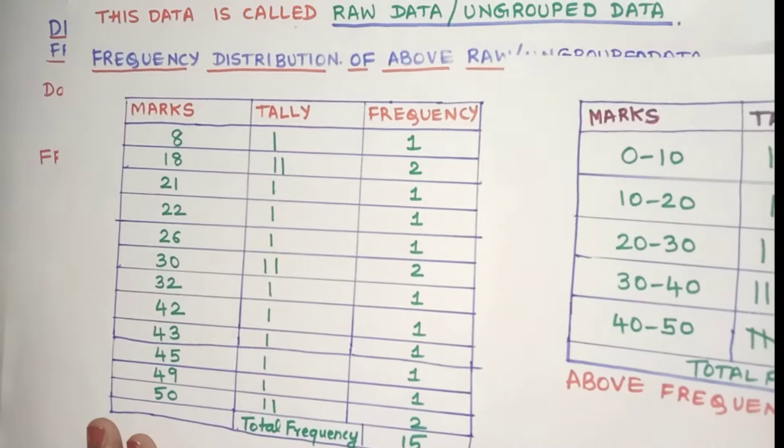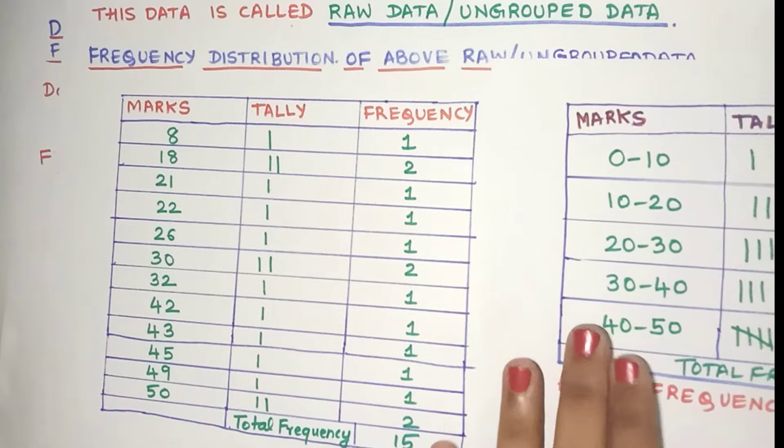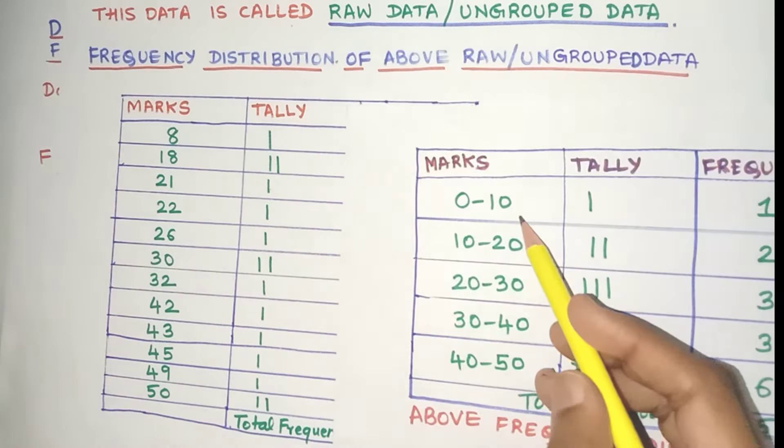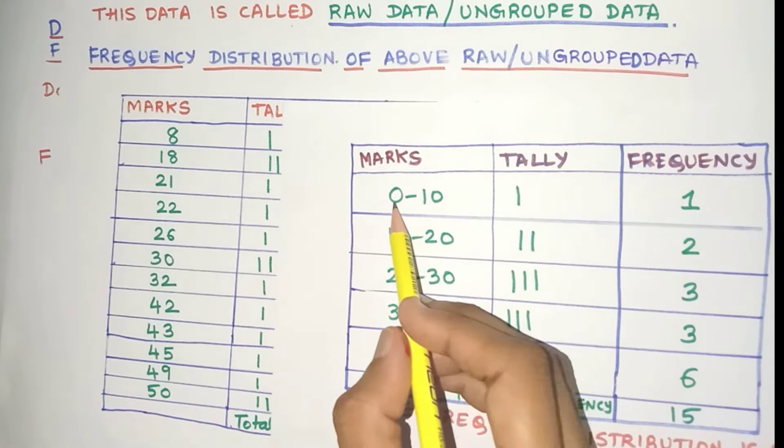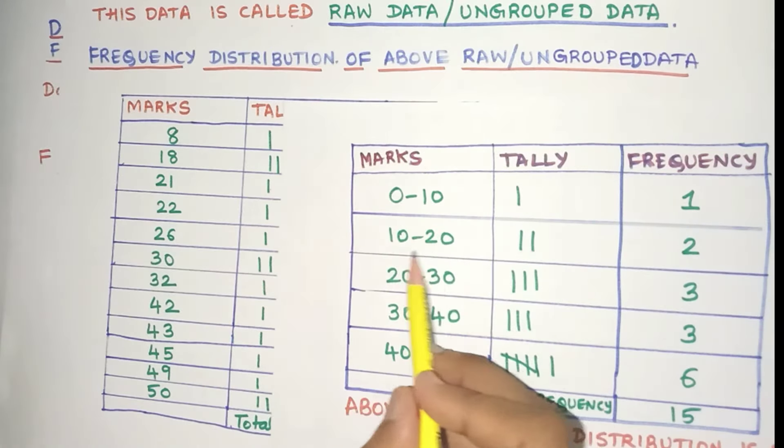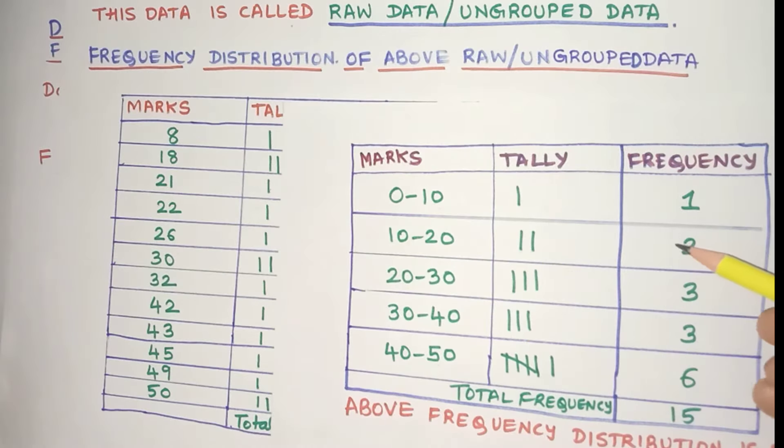Just compare friends, the frequency distribution of ungrouped data and grouped data. You will see in the marks column, here you had the individual marks, whereas here you have the groups: 0 to 10, 10 to 20, and you have the tally and the frequency.